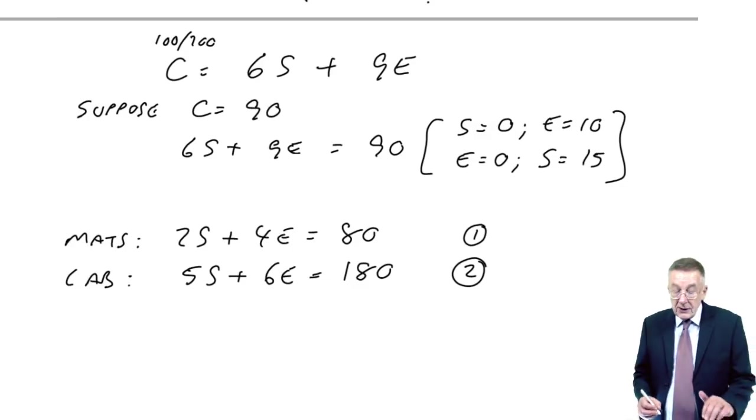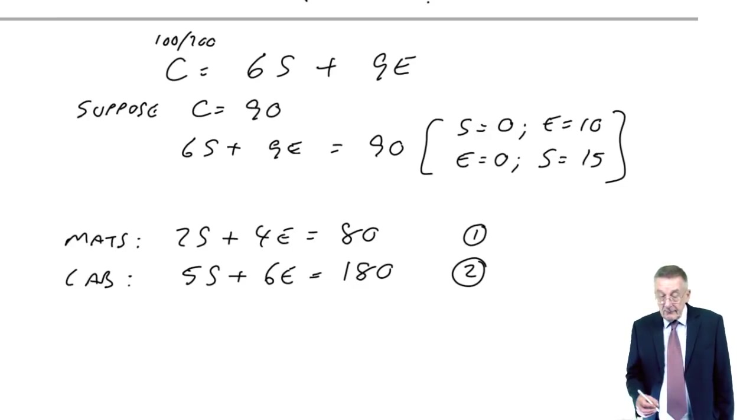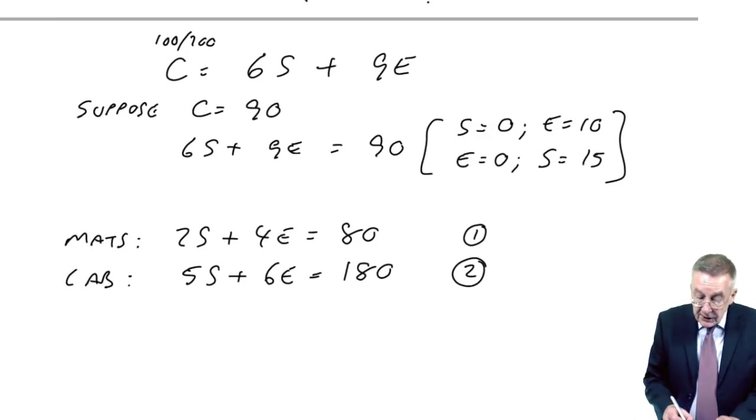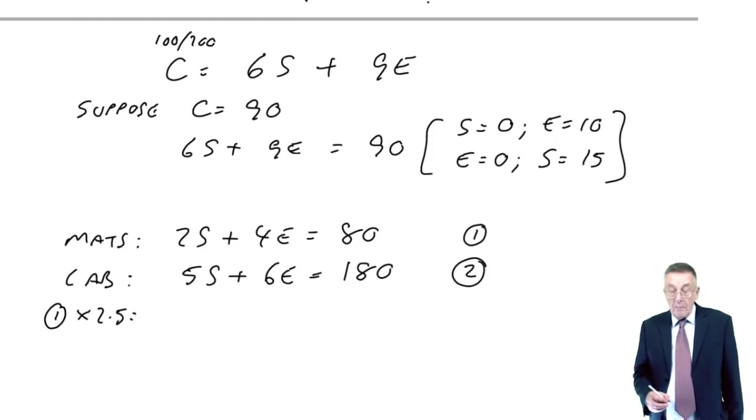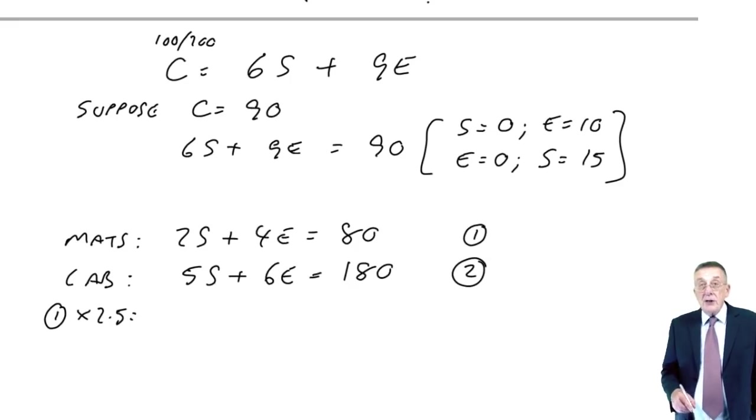And what I'm going to do is this. If I number the equations 1 and 2, I'm going to multiply the first equation by 2.5. I'll tell you why in a minute. But if I multiply the first equation, if I multiply everything by 2.5.